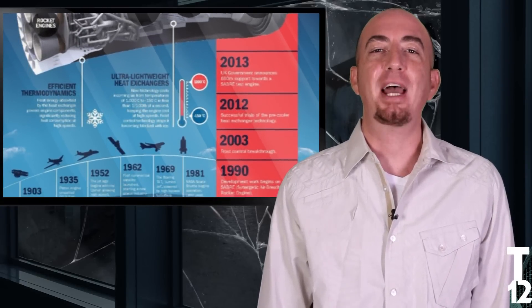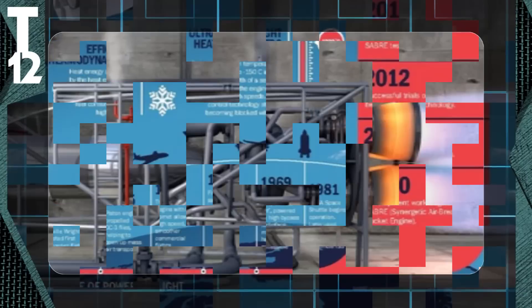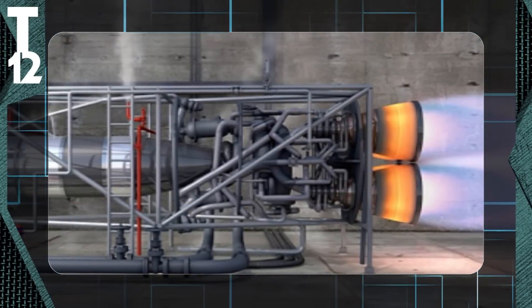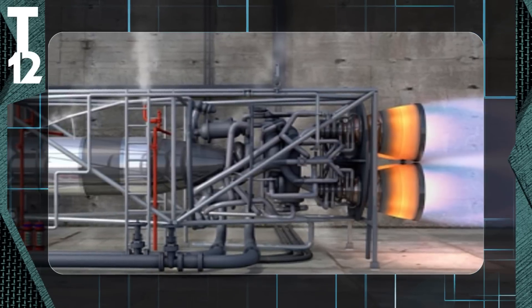Sabre works like a normal jet engine until it hits 2,500 miles per hour where it switches to an actual rocket fuel engine. Aircraft with Sabre technology will be able to take off from a normal runway.